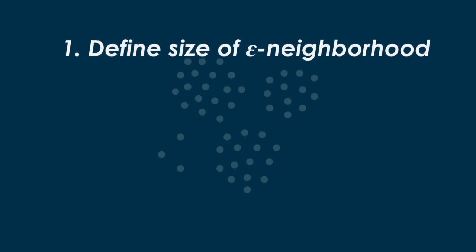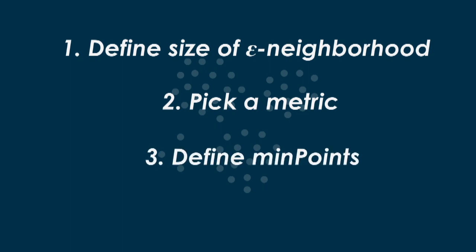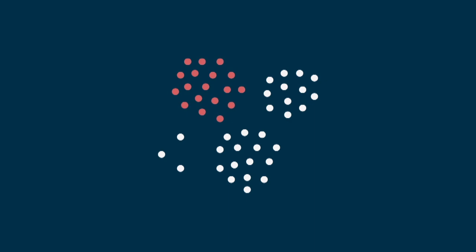You might be wondering: does starting at a different core point change the clusters that come out of the algorithm? Kind of like how initializing badly can ruin k-means? The answer is no. All you have to do is define how big the epsilon neighborhood is — pick epsilon, pick a metric to use, and say how many points a point needs to have in its epsilon neighborhood to be a core point. This is min points. No matter where you start in testing whether points are core points or not, you will get the same result every time.